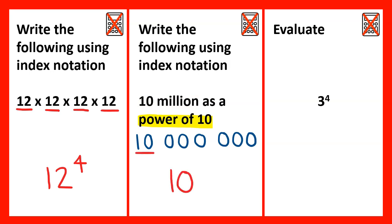10 has been multiplied by itself, itself, itself, itself, itself, and then itself again — so that would be a total of 7. That gives us 10 to the power of 7.